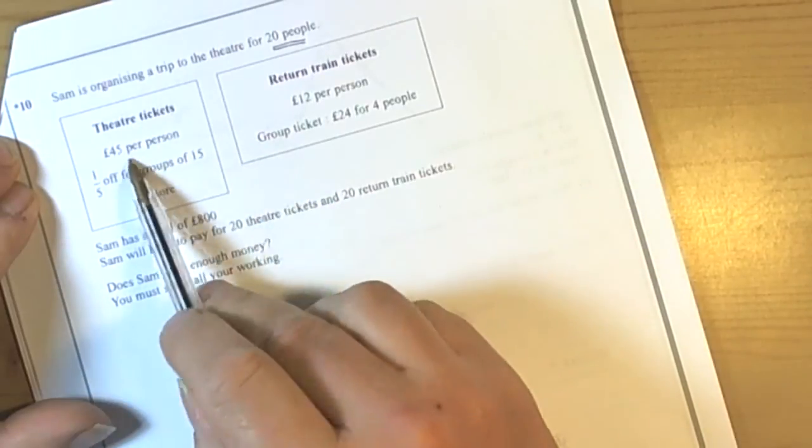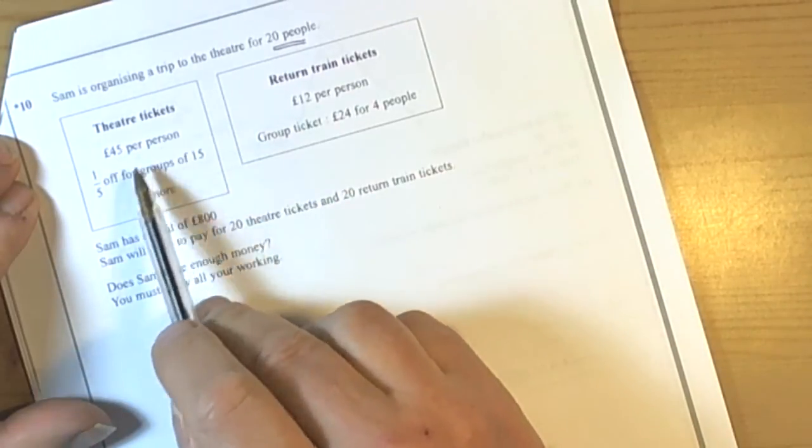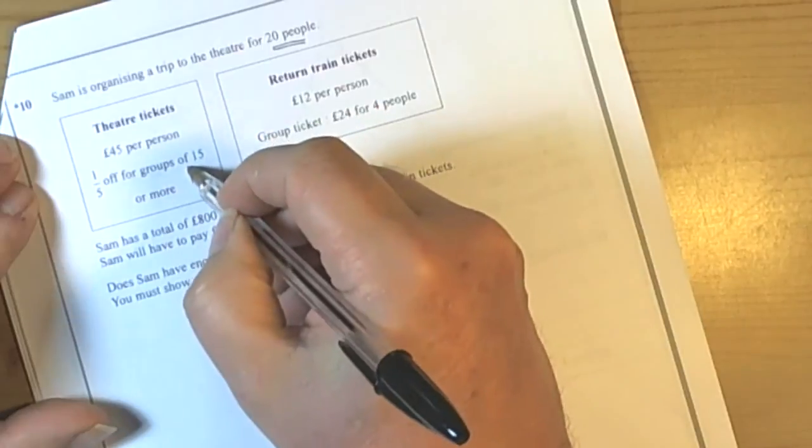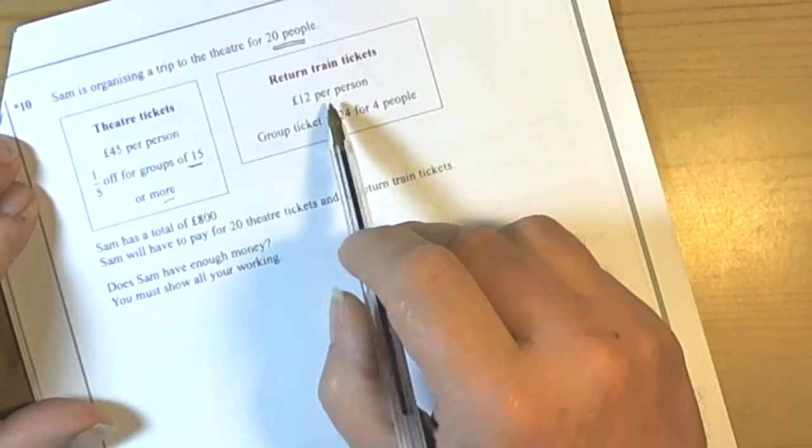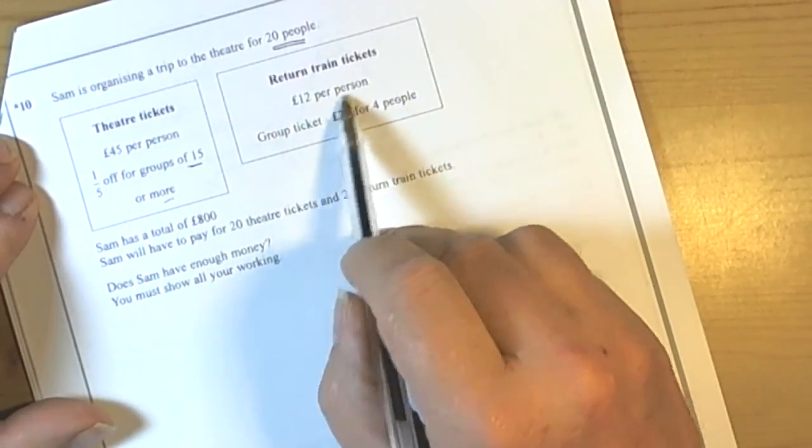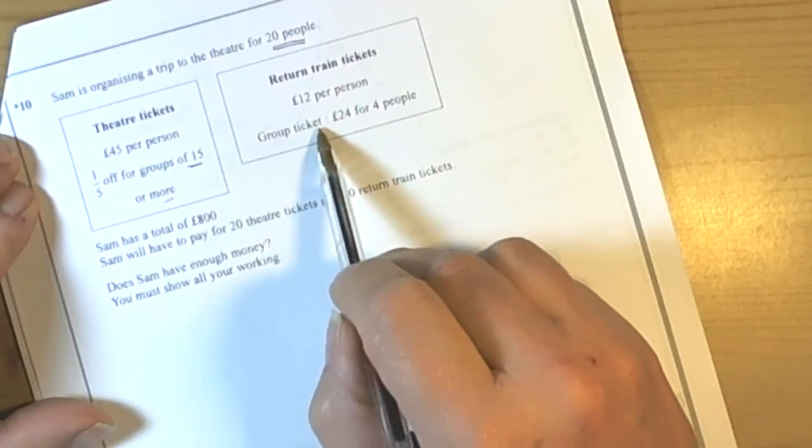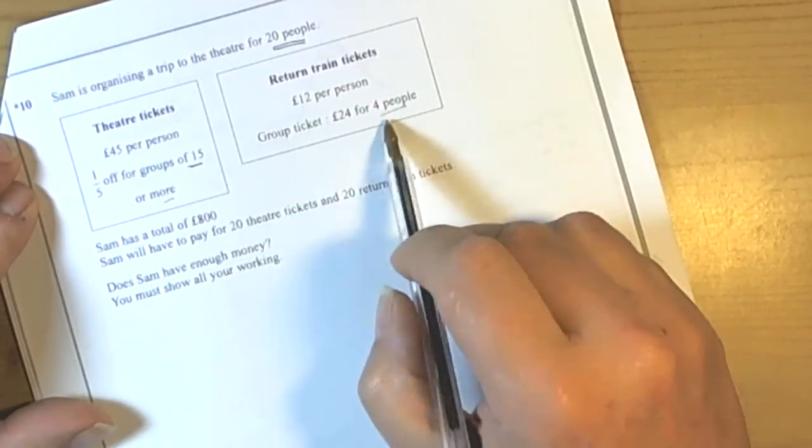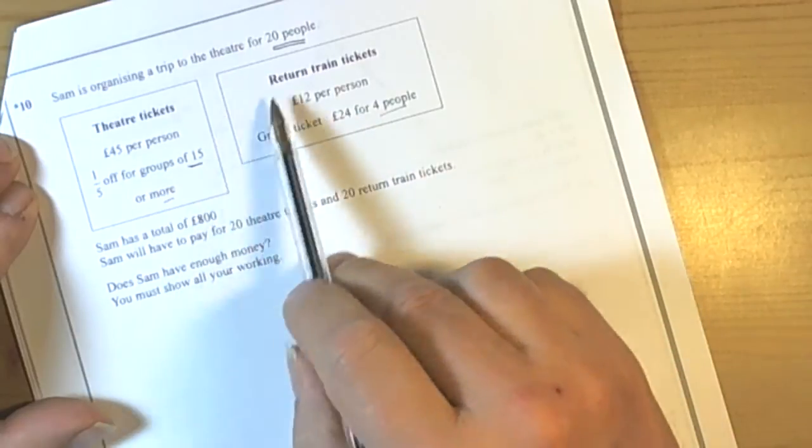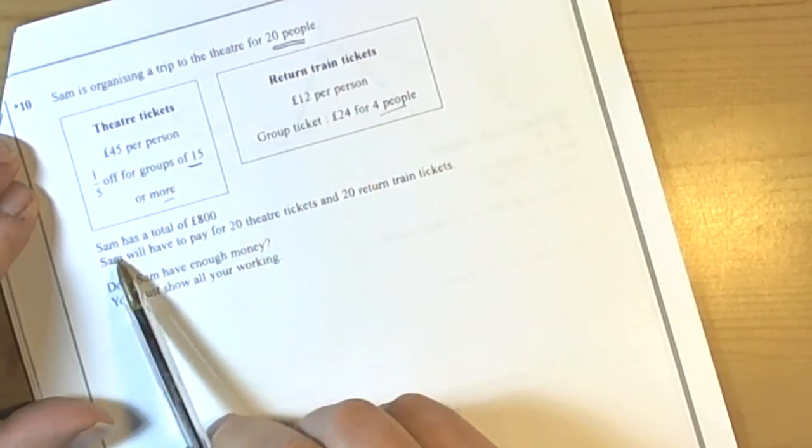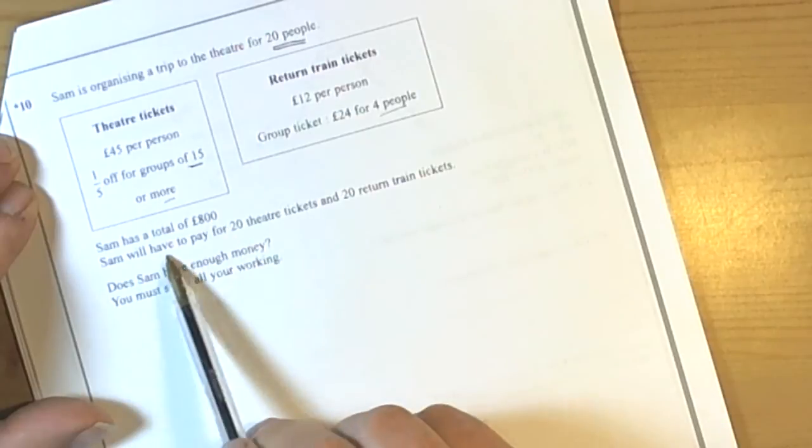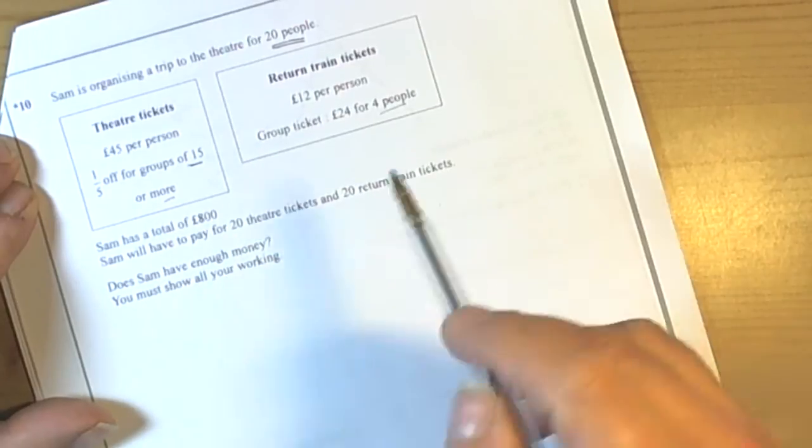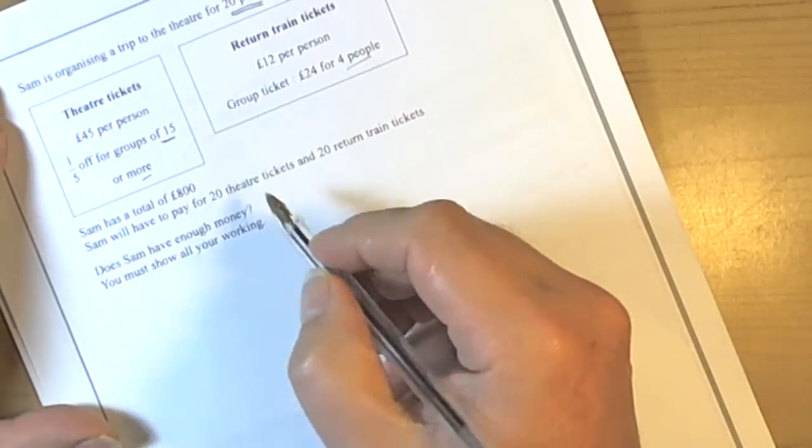We've got some prices here, so theatre tickets £45 per person, one-fifth off for groups of 15 or more, and train tickets £12 per person, and group tickets can be bought at £24 for four people. So we can use this information to kind of break out which is the cheapest, because Sam has a total of £800. Does he have enough money? OK, so literally it's looking for value.